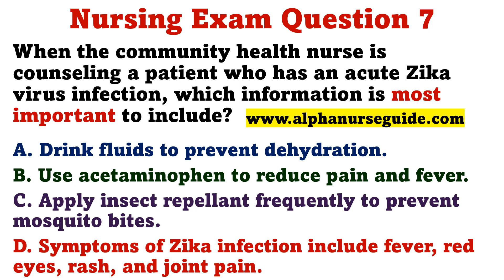When the community health nurse is counseling a patient who has an acute Zika virus infection, which information is most important to include? A. Drink fluids to prevent dehydration. B. Use acetaminophen to reduce pain and fever. C. Apply insect repellent frequently to prevent mosquito bites. D. Symptoms of Zika infection include fever, red eyes, rash, and joint pain.